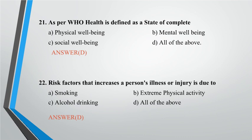Question 22: Risk factors that increase a person's illness or injury is due to? A. Smoking, B. Extreme physical activity, C. Alcohol drinking, D. All of the above. Answer: D.